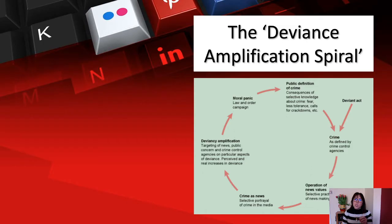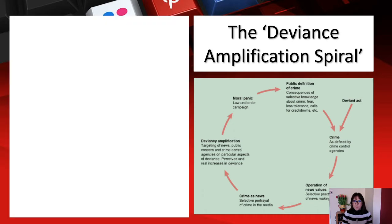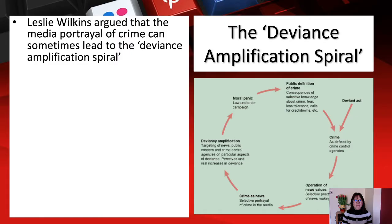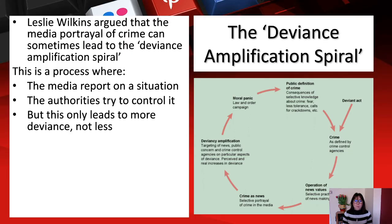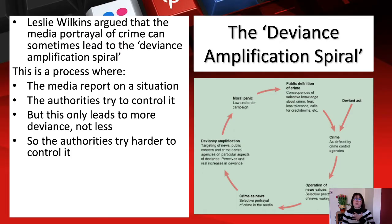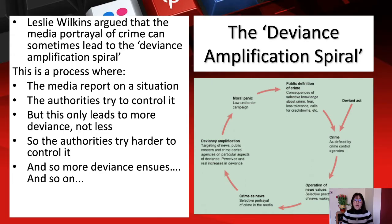This leads into what is called the deviance amplification spiral. Leslie Wilkins argued that media portrayal of crime can sometimes lead to this spiral. Deviance is something that goes against the norm, often in a negative sense. The process works like this: the media reports on a situation such as the mods and rockers, the authorities try to control it, but this only leads to more deviance, not less. The authorities then try harder to control it, and so on.